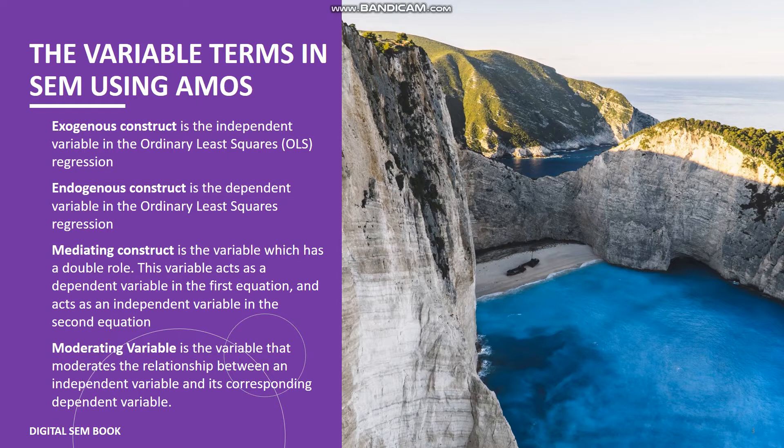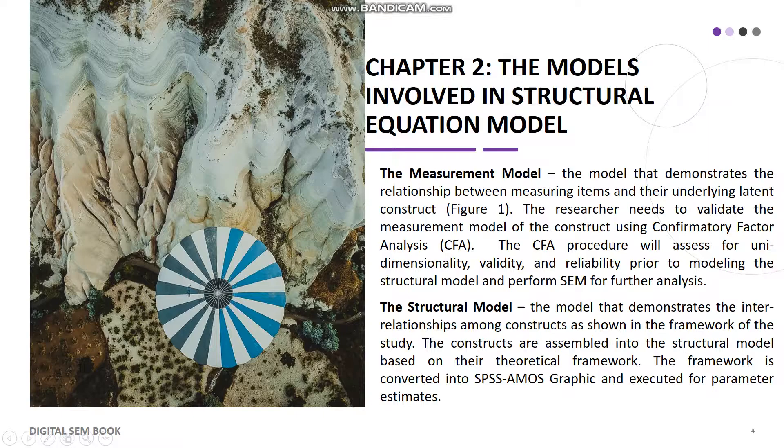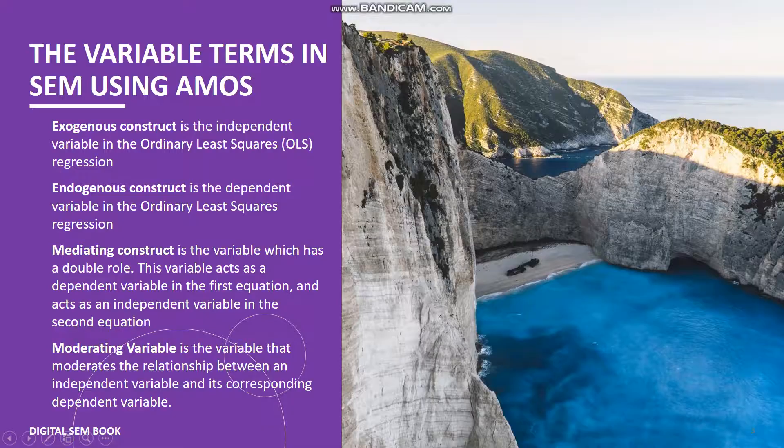Moderating variable is the variable that moderates the relationship between an independent variable and its corresponding dependent variable.